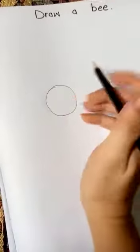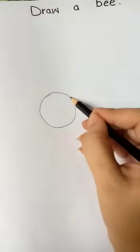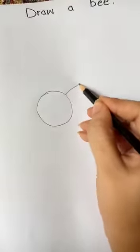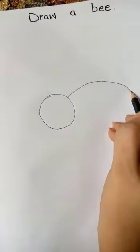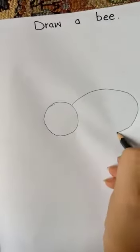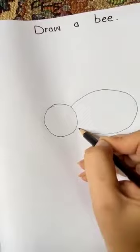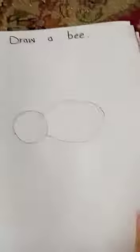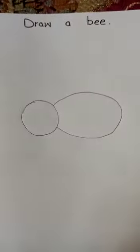Now draw a circle. Then we draw an oval. Okay? Okay class, you can draw an oval. Very good.